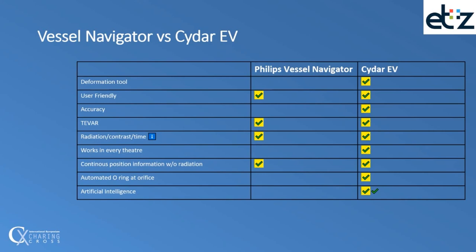Looking at the two systems: CIDAR comes with a unique deformation tool that keeps the overlay clinically and technically relevant throughout the entire procedure. Both are user-friendly, but CIDAR is more accurate. TAVI was only offered in Philips Vessel Navigator before, but now also with CIDAR. Both reduce radiation, contrast, and time compared to no overlay system at all. CIDAR works in every theatre, and continuous position information without radiation, previously only available in Philips Vessel Navigator, is now updated in CIDAR as well.